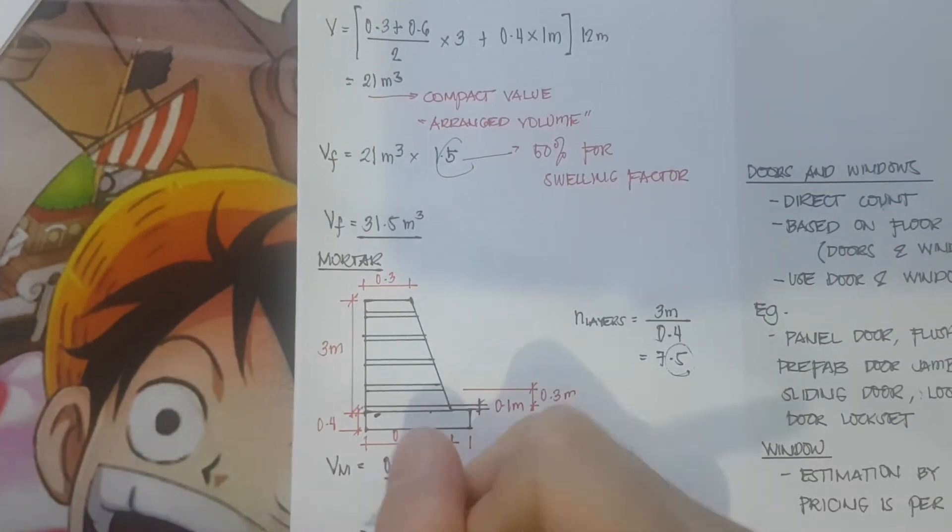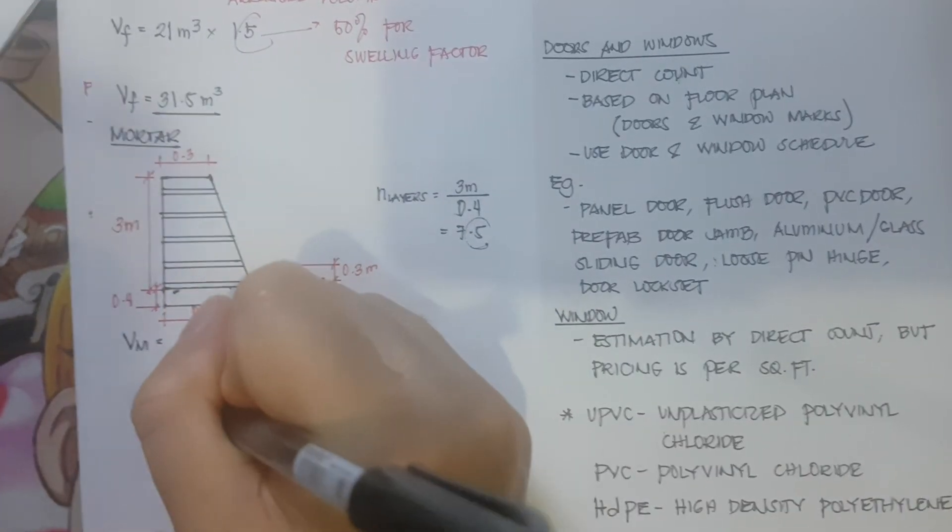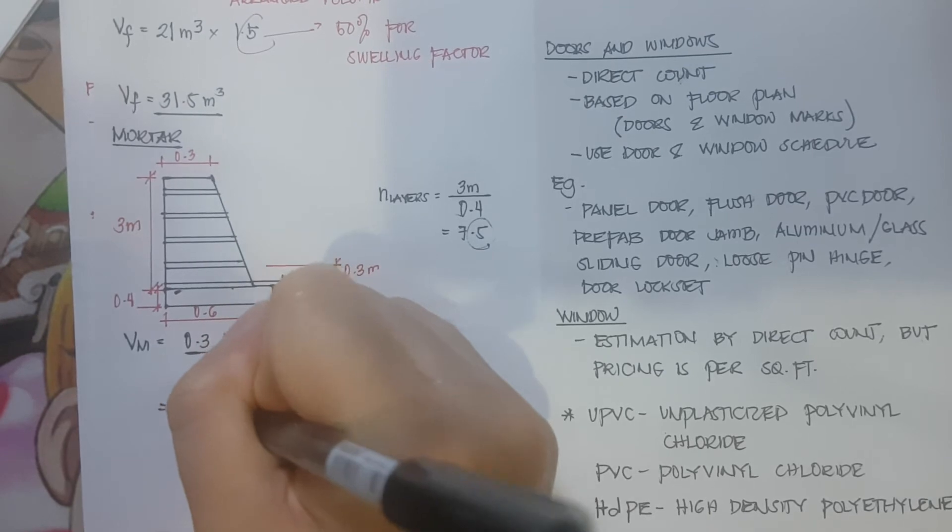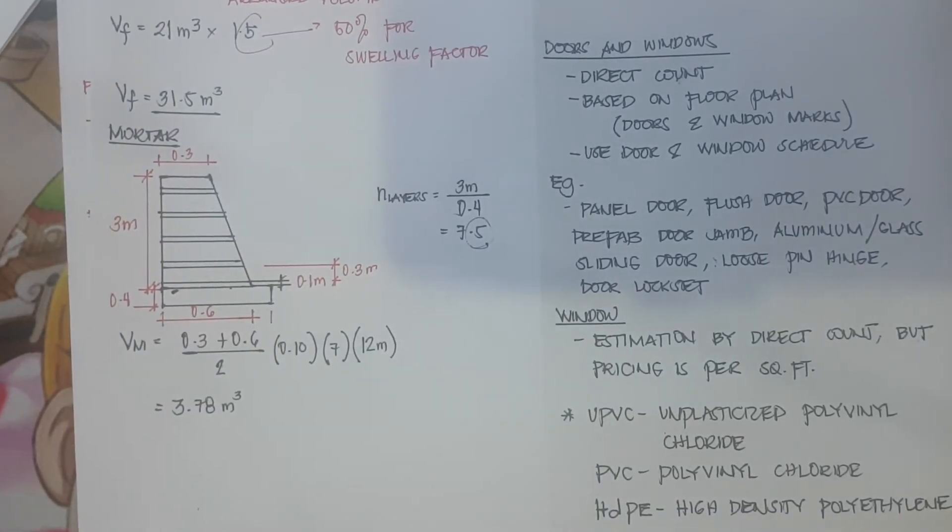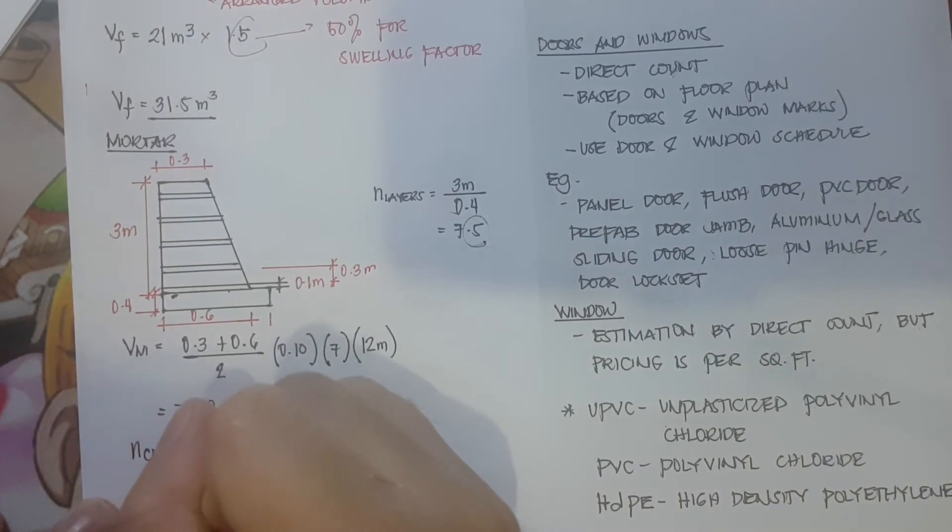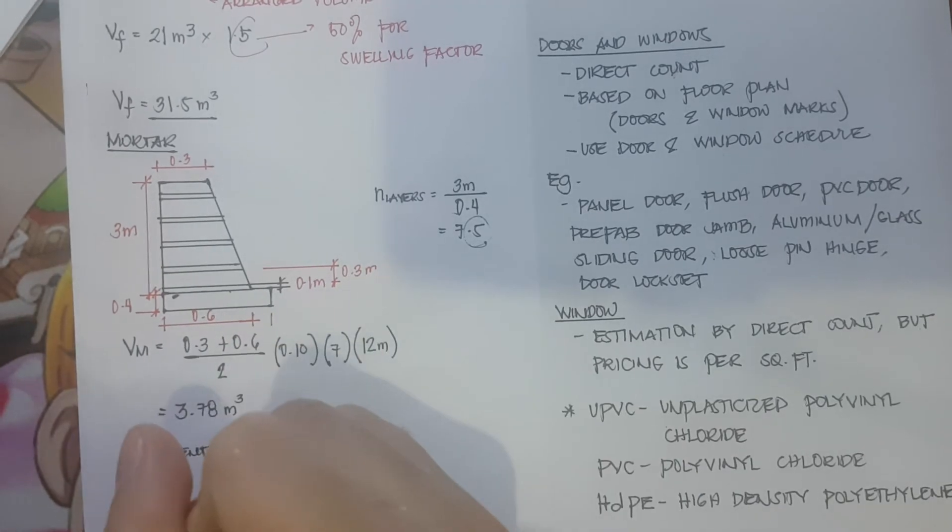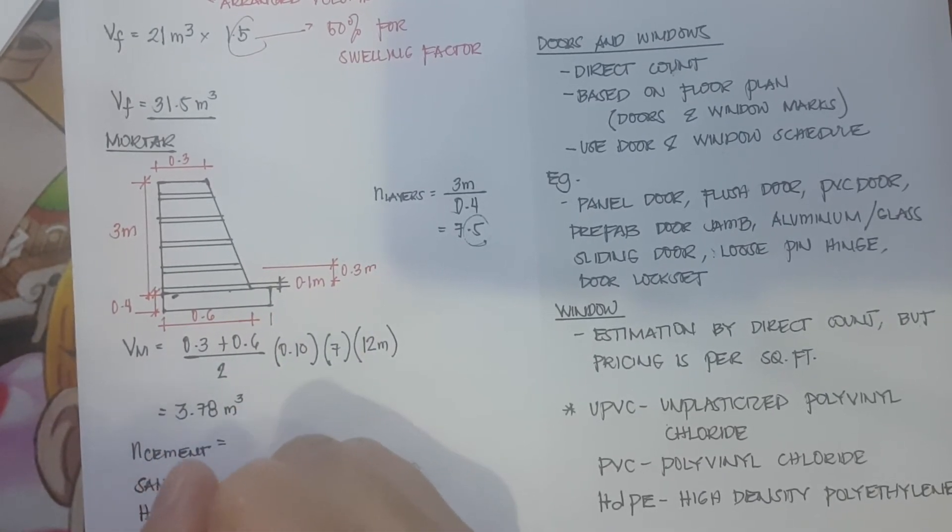So the volume of the mortar is equivalent to 3.78 cubic meters. From there you can now determine your number of cement, number of cement and sand together with water.